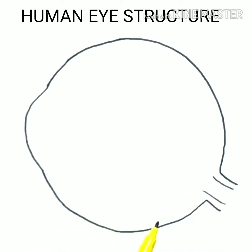Eyeball: Convex lens approximately spherical in shape with a diameter of about 2.3 centimeters. It can alter its curvature with the help of ciliary muscles.